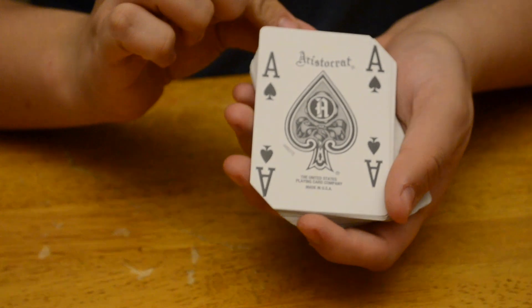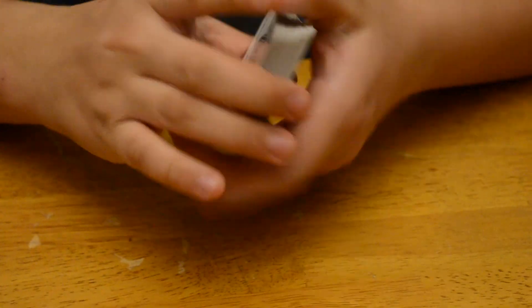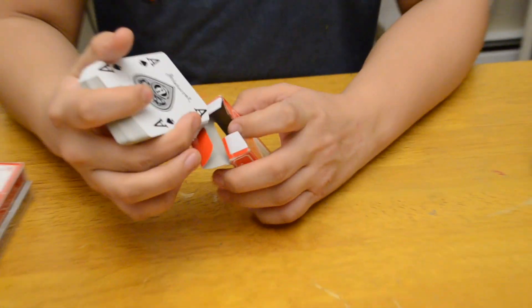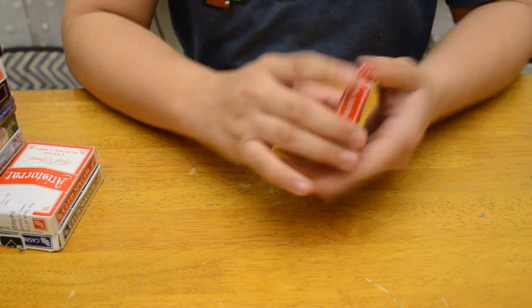As you can see, it has a window also. And it has the Aristocrat Ace of Spades.